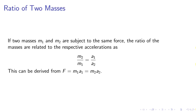The ratio of two masses. If two masses M1 and M2 are subject to the same force, the ratio of the masses are related to the respective accelerations as M2 over M1 equals A1 over A2. This can be derived from F equals M1 A1 equals M2 A2.